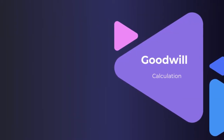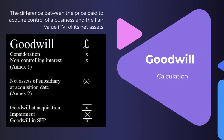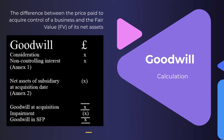Goodwill is the difference between the price paid to acquire control of a business and the fair value of its net assets — essentially the amount you've overpaid on top of what the net assets show in the statement of financial position. To work out goodwill, we take the consideration, add the non-controlling interest, then deduct the net assets of the subsidiary at the acquisition date — note, that's very important, at the acquisition date. That gives us goodwill at acquisition. If there's any impairment, we deduct that too, leaving us with goodwill in the statement of financial position.